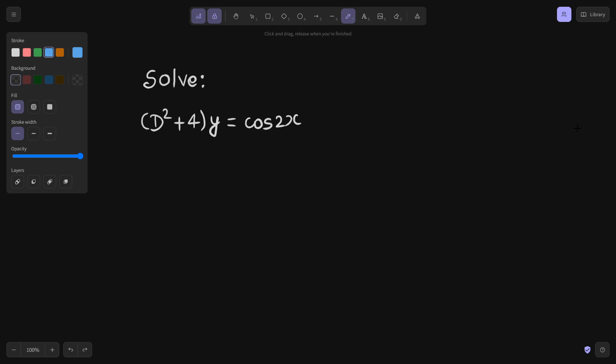First thing will be to find your complementary function, and for finding complementary function we will need what is called auxiliary equation. Finding auxiliary equation is very simple. Just replace capital D by M, so you get M² + 4 and equate this bracket to 0.